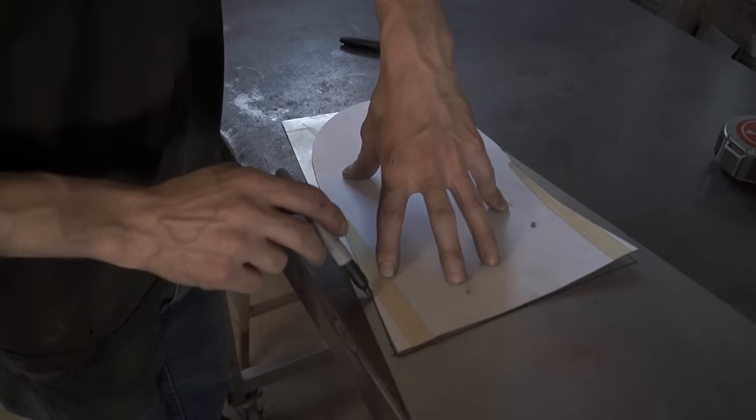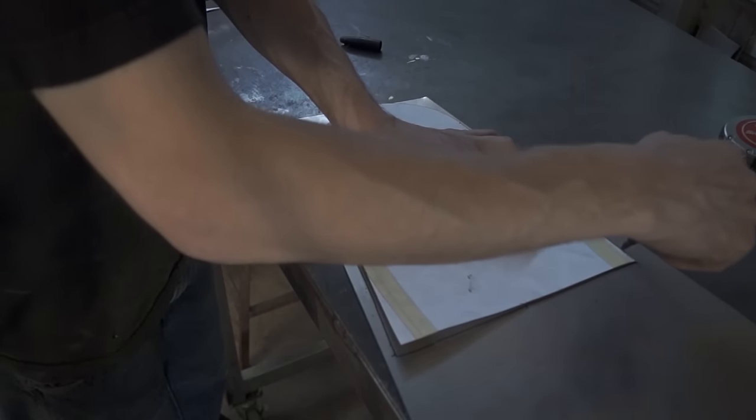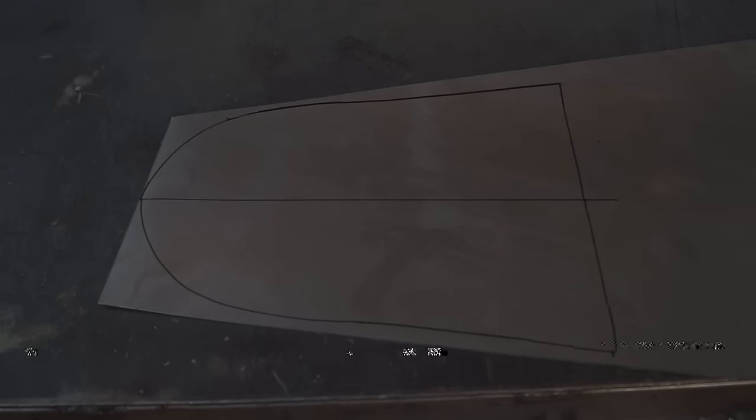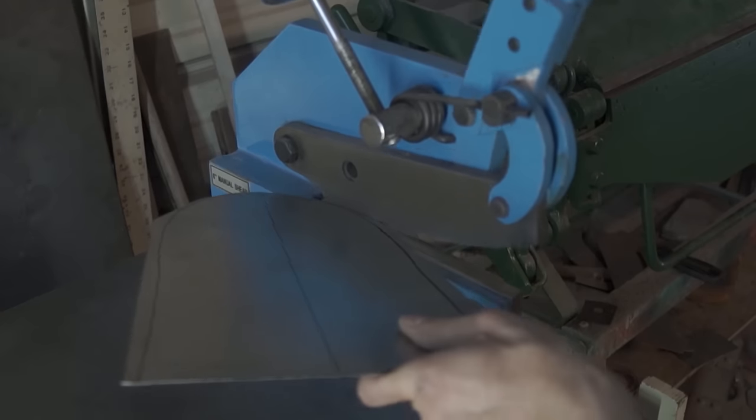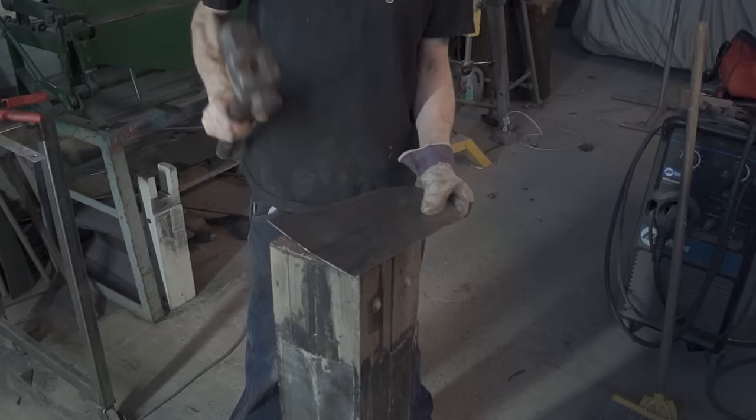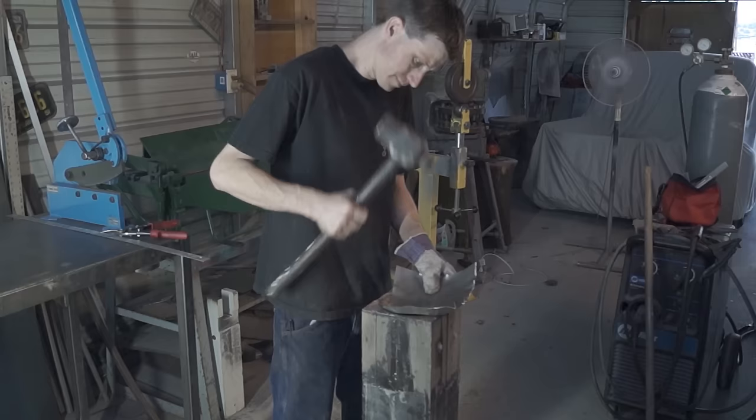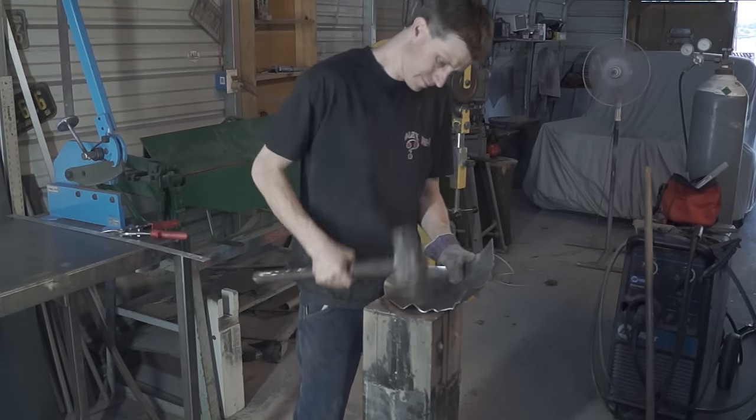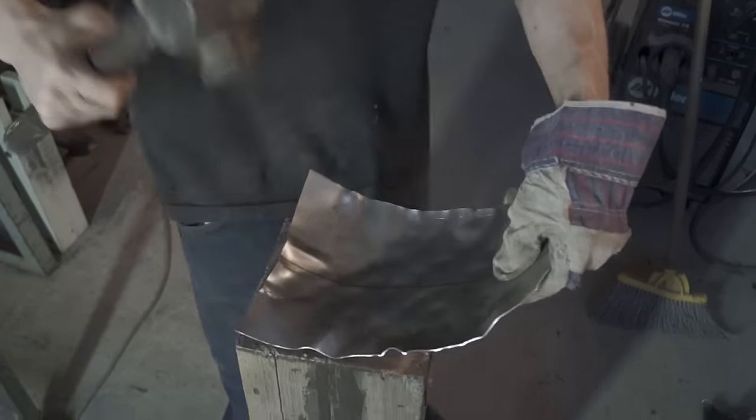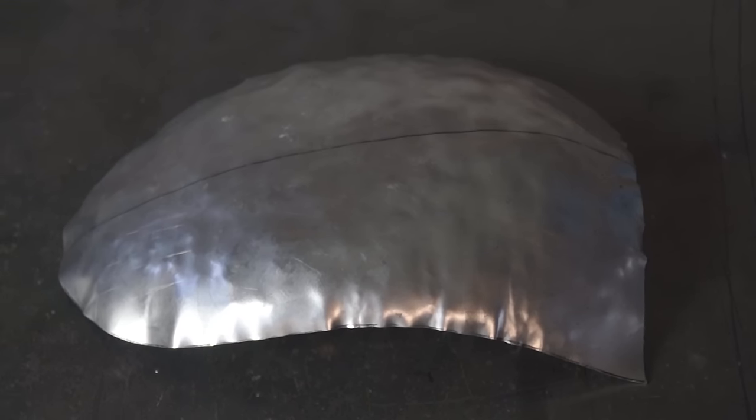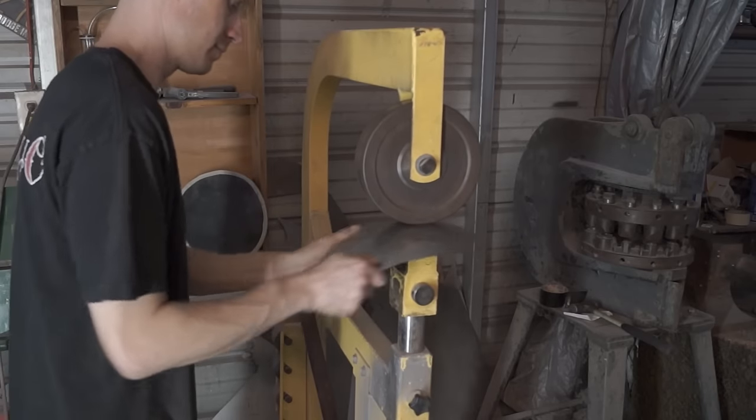I started by marking the shape out on 18 gauge sheet metal. After cutting the dome out I used a hammer to shape it. Then I used the English wheel to smooth the piece out.